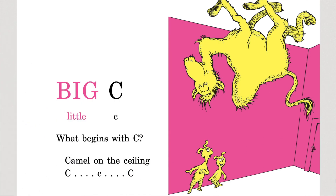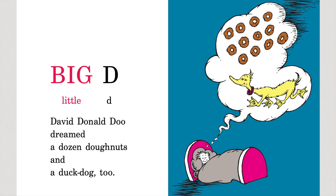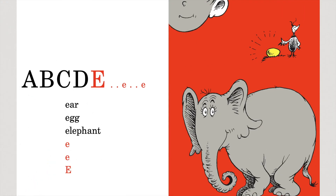Big C, little C, what begins with C? Camel on the ceiling, C, C, C. Big D, little D — David Donald Dew dreamed a dozen doughnuts and a duck dog too. A, B, C, D, E, E, E. Ear, eggplant, elephant, E, E, E.